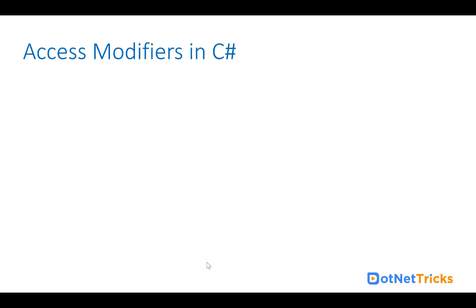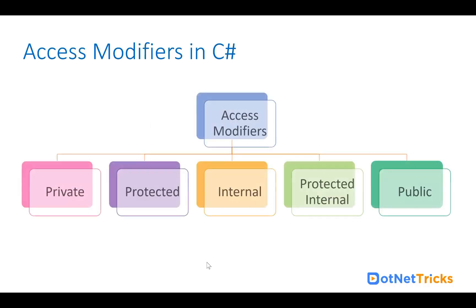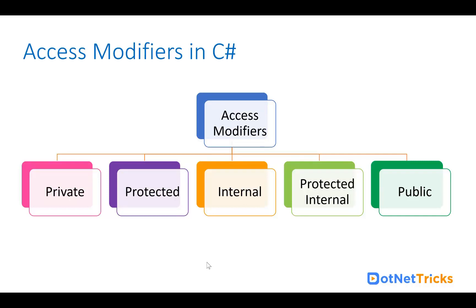Let's see what are the various access modifiers we have in C#. In C#, we have private, protected, internal, protected internal, and public. These are the five access modifiers we can use in C#.